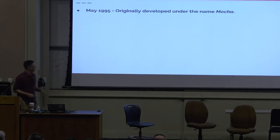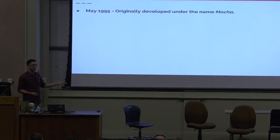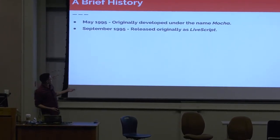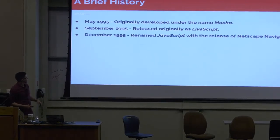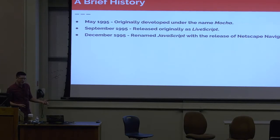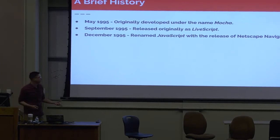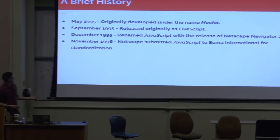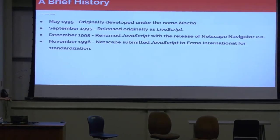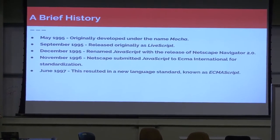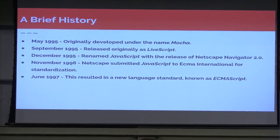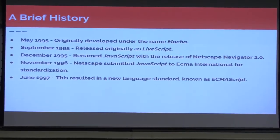First, we're going to go over a brief history of JavaScript. In May of 1995, JavaScript was originally developed under the name of Mocha. It was released in September of 1995 under the name of LiveScript. From there, it was renamed to JavaScript in December with the release of Netscape Navigator 2.0. In 1996, Netscape submitted JavaScript to the ECMA International for standardization. And in 1997, this resulted in a new language standard known as ECMAScript.